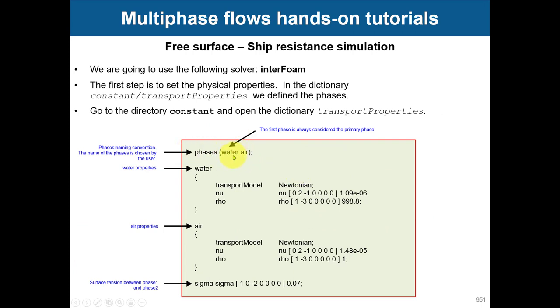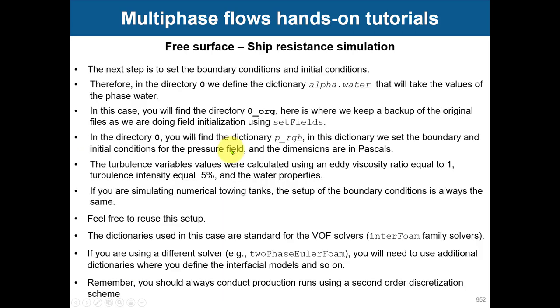This file defines the physical properties. Pay attention to which phase you put first — that is the primary phase. When we define boundary conditions, the primary phase is the one we reference, which in this case is water.